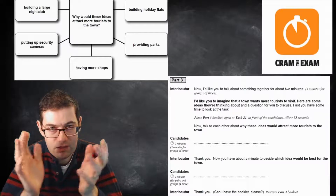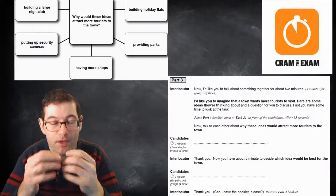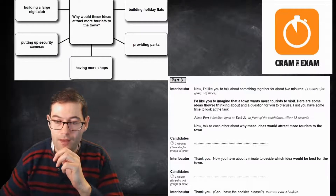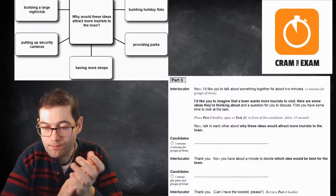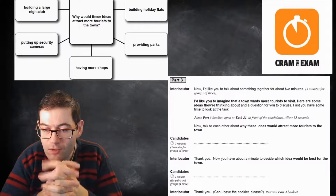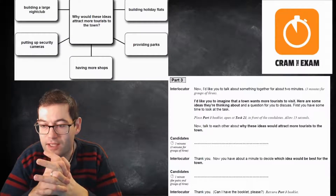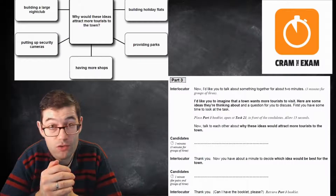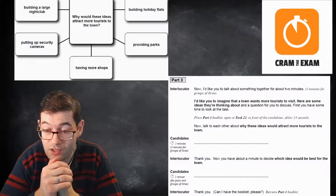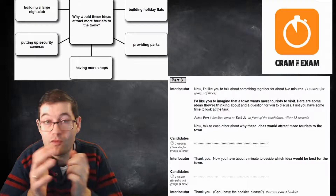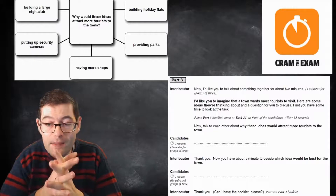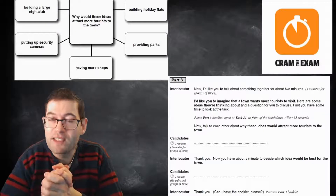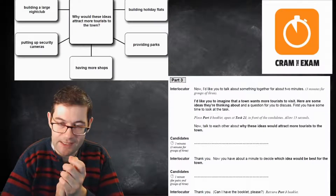You've got two minutes to show the examiner your fantastic speaking skills. The examiner would then stop you and say: 'Thank you. Now you have a minute to decide which idea would be the best for them.' This is the agreeing, disagreeing, or coming to a conclusion — or at least agreeing to disagree. You've got one minute to do that, and then the examiner says: 'Thank you. Can I have the booklet, please?' The conversation element of the exam is over.